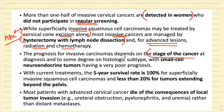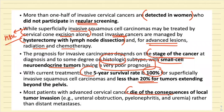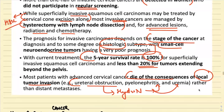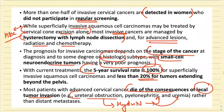Prognosis depends on the stage of the cancer — greater the stage, worse the prognosis — and also on the histological type. For example, the small cell neuroendocrine tumor is a high-grade tumor with a very bad prognosis. With current treatment, the five-year survival rate is 100 percent for superficially invasive squamous cell carcinoma and less than 20 percent for tumor extending beyond the pelvis. Most patients with advanced cervical carcinoma die of consequences of local tumor invasion — such as hydronephrosis, pyelonephritis, and uremia — rather than distant metastasis.